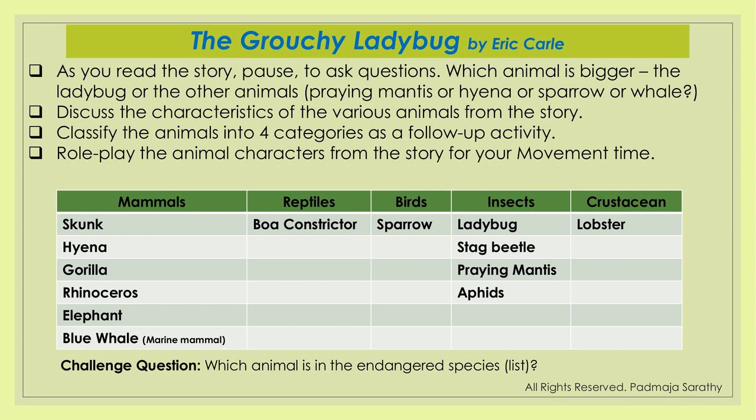I'm going to begin with one example of a story that includes a variety of animals of different classifications — The Grouchy Ladybug story. It's a beautiful story by Eric Carle that portrays different animals. There is the grouchy ladybug and the nice ladybug. The grouchy ladybug won't let anybody share the food and keeps talking about how big and great he is, but it brings in a great variety of animals for our purpose.